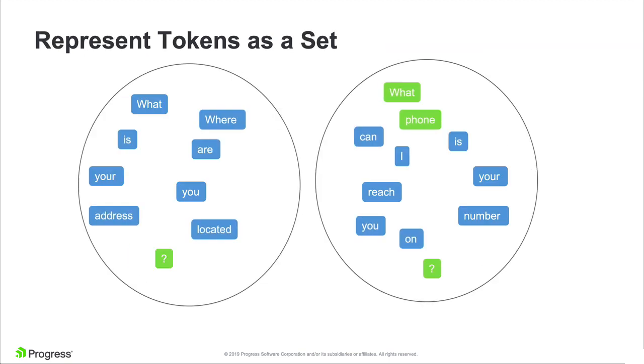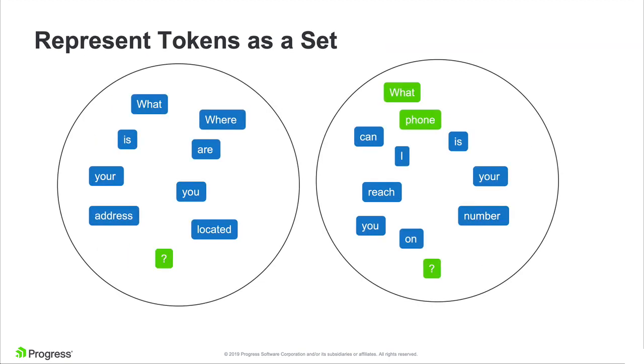We can represent those tokens as a set of tokens. On the left, we have the address set of tokens; on the right, we have the phone set of tokens.